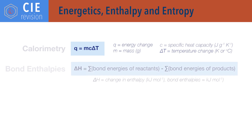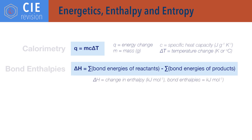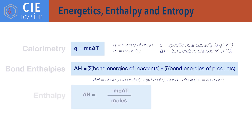Delta H, change in enthalpy, equals sum of bond energies of reactants minus the sum of bond energies of products — sum of means added together. Delta H, change in enthalpy, also equals minus mcΔT divided by moles.